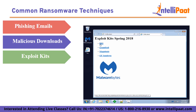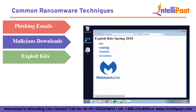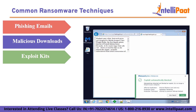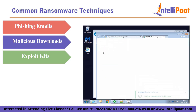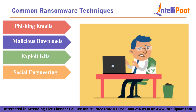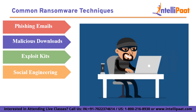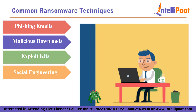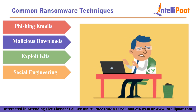Exploit kits: attackers take advantage of vulnerabilities in software and operating systems to deliver ransomware. They use specialized tools called exploit kits to automatically search for and exploit these weaknesses. Social engineering: ransomware operators use psychological manipulation to deceive victims, impersonating a trusted entity such as a bank or service provider to trick you into providing personal information or downloading malicious content.